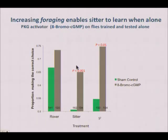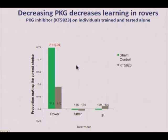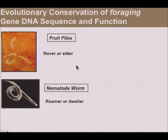To confirm the foraging gene's involvement, we used pharmacological manipulations. Activating PKG made sitters — both natural sitters and sitter mutants — learn very well. Using a PKG inhibitor made rovers poorer learners and sitters remained very low. This confirms that the foraging gene is involved in this social context-dependent learning difference.